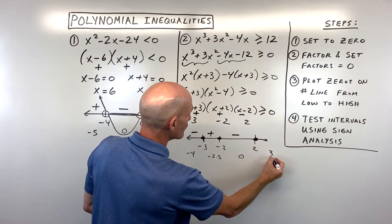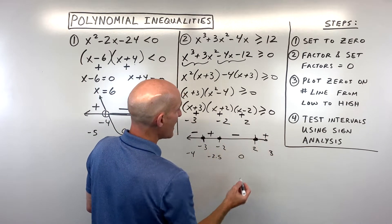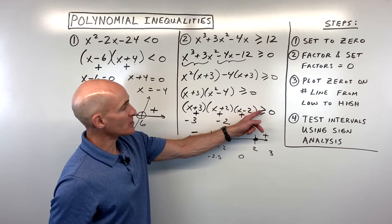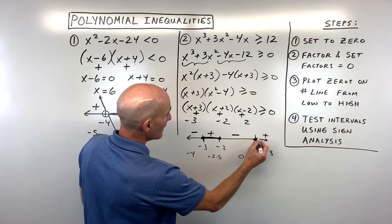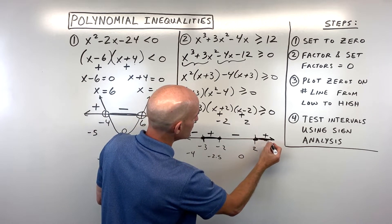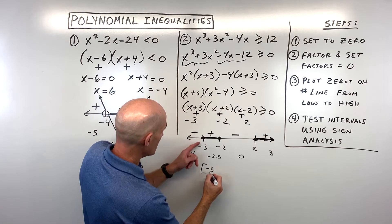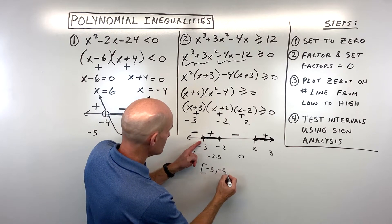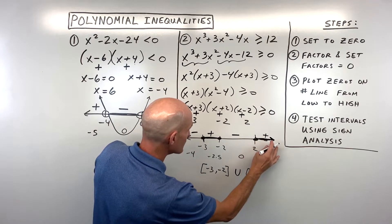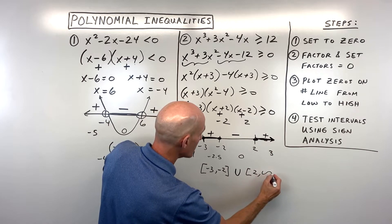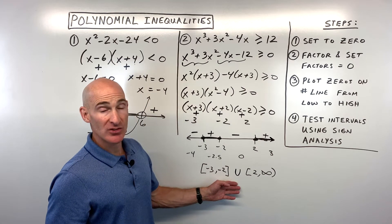Testing 3: positive times positive times positive is positive. We're interested in where it's greater than or equal to 0, meaning positive or zero. That's the second and fourth intervals. In interval notation: negative 3 to negative 2 (closed brackets, including both), union 2 to positive infinity (closed bracket at 2, open at infinity, since you can never reach infinity).